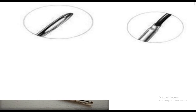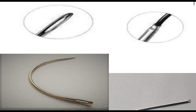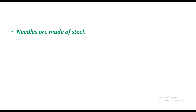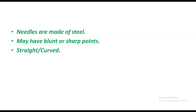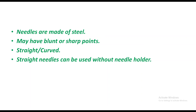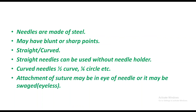Needles are made of steel and may have blunt or sharp points. They may be straight or curved. Straight needles can be used without a needle holder, but are difficult to handle. Curved needles may be half circle or one-fourth of the circle. The attachment of the suture may be in the eye of the needle or it may be swaged, meaning eyeless.